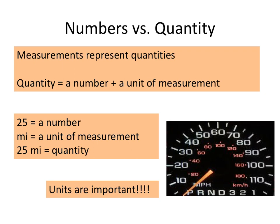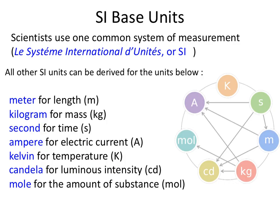A quantity is going to be a number value and a unit of measurement. As we start discussing the type of measurement system we're going to use, we'll be looking at the metric system, or the International System of Units, sometimes abbreviated as SI. You're probably already familiar with several of these units, and all other units can be derived from these base units.